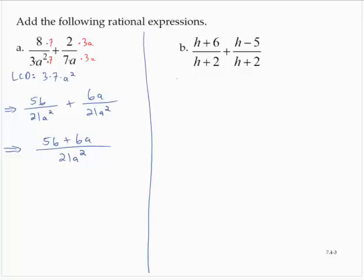These fractions already have a common denominator. So I can rewrite this using addition as h plus 6 plus h minus 5 over the common denominator of h plus 2.